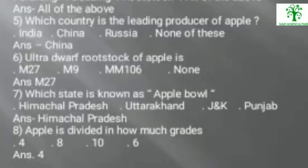India is second after China in apple production. (6) Ultra dwarf rootstock of apple — options: M27, M9, MM106, or none. Answer: M27. (7) Which state is known as the apple bowl — options: Himachal Pradesh, Uttarakhand, J&K, or Punjab. Answer: Himachal Pradesh. (8) Apple is divided into how many grades — options: four, eight, ten, or six. Answer: four.